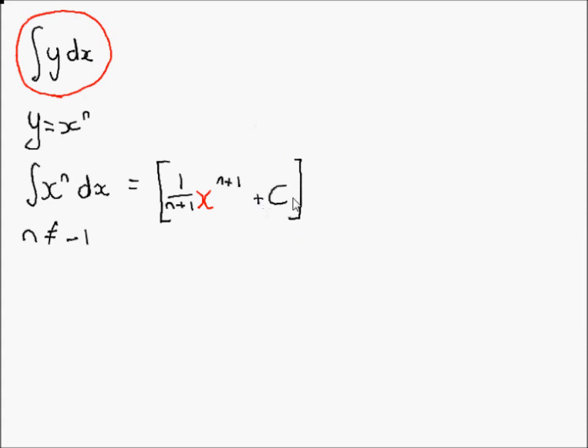Now, this plus C is the bit that if you forget it, you'll lose a mark right there. And this is because it basically shows that you know there could have been a constant in the function before it was differentiated.